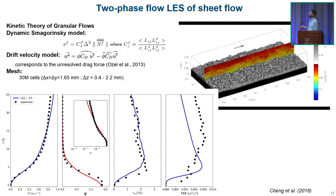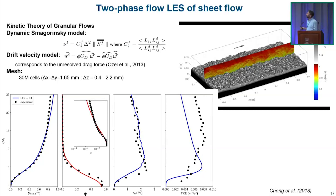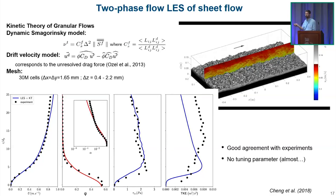Is it quantitative? Yes. Looking at velocity, concentration, Reynolds shear stress, and TKE, the matching is pretty good. Even for concentration in log scale, very far from the bed we can predict turbulent suspension well. There is almost no tuning parameter — one exception is a model for the unresolved part of the drag force called the drift velocity, which is needed to get very good results.